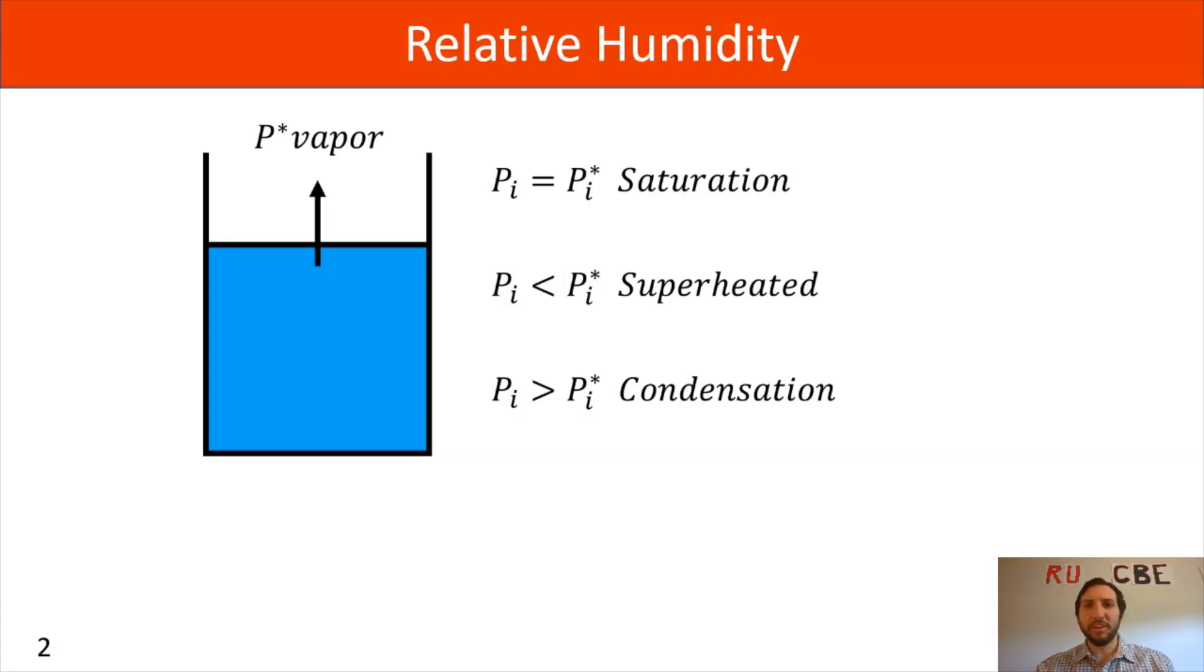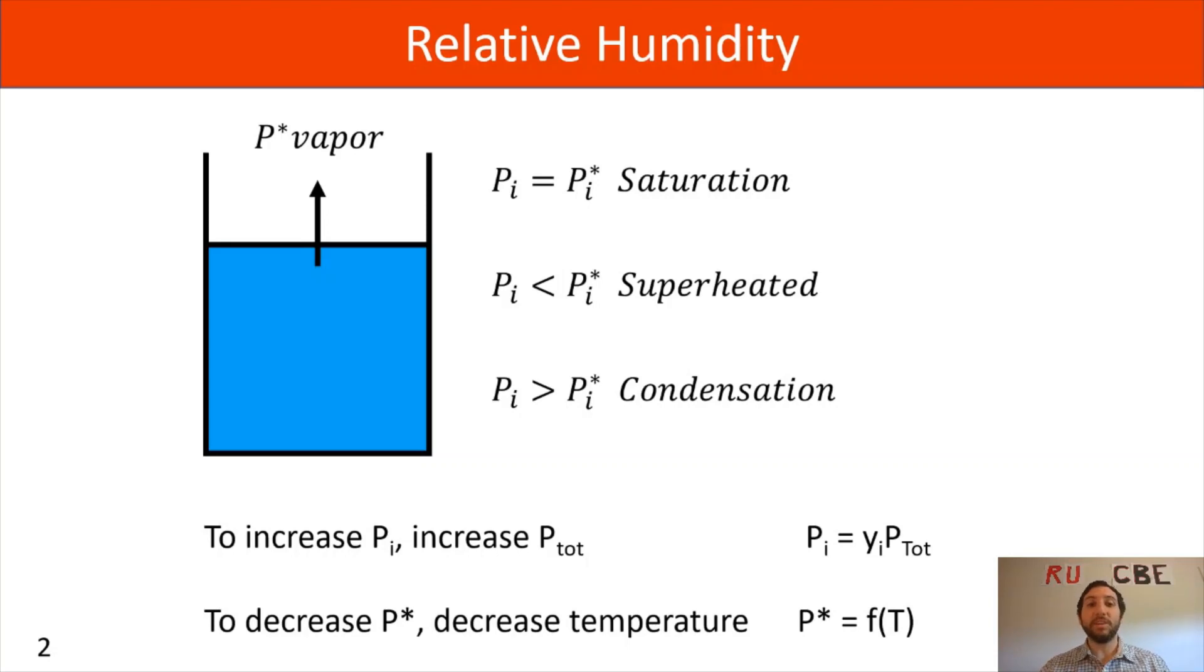As a reminder, if you ever want to change the system, change the partial pressure, or induce condensation, you can increase the total pressure which will increase your partial pressure of component i. Another option is to decrease P star by decreasing your temperature.